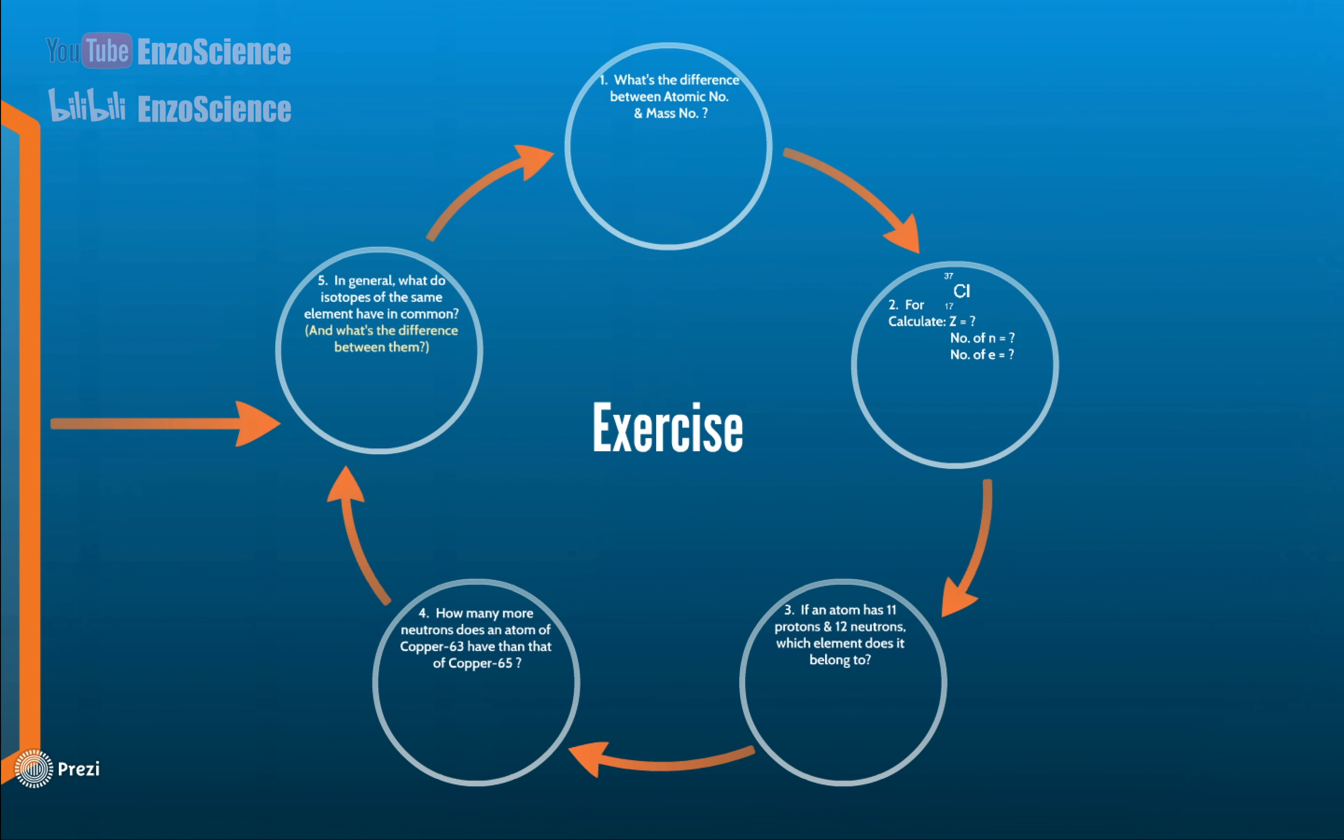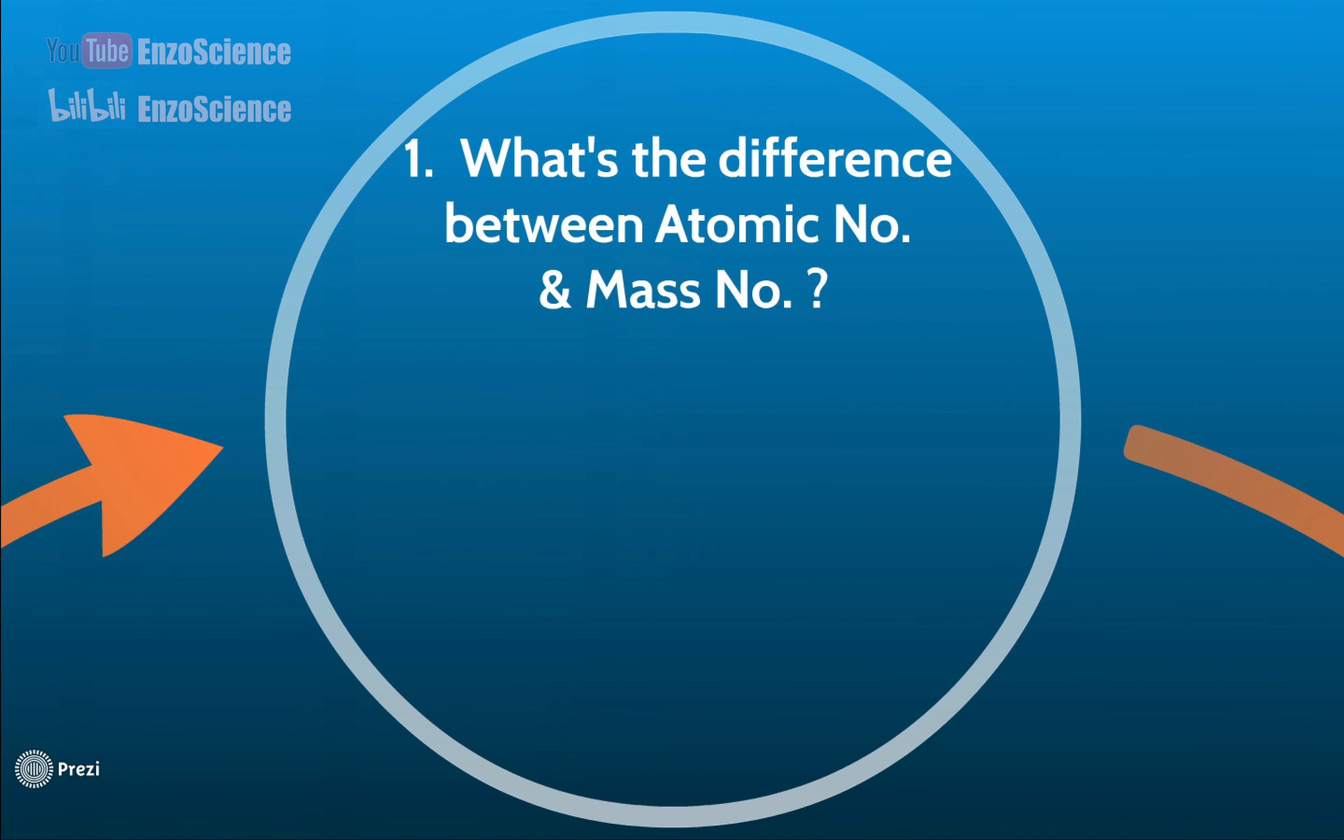Now let's have five questions before we wrap up. The first asks the difference between atomic number and mass number. We introduced this point just now. Atomic number or capital Z means number of protons. Mass number or capital A equals number of protons plus number of neutrons.